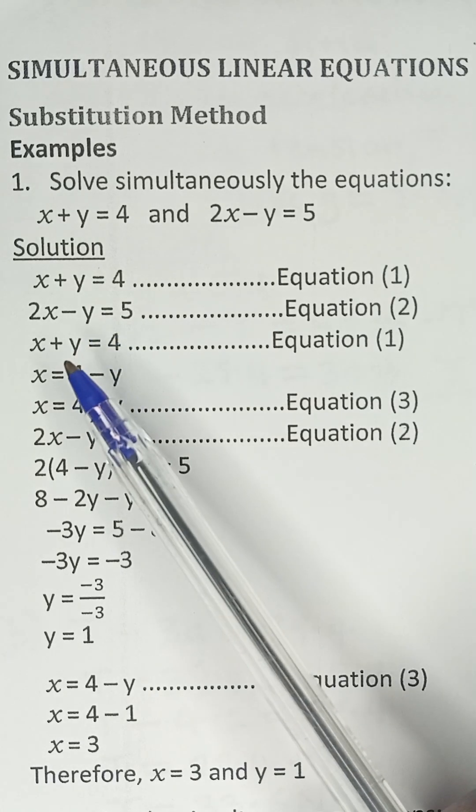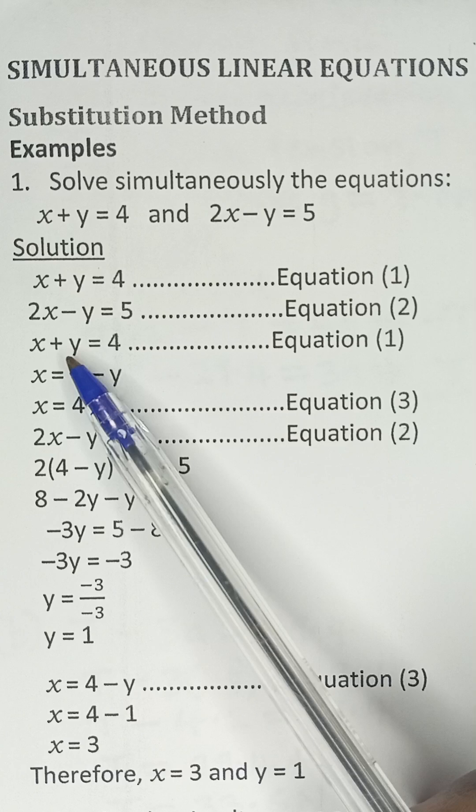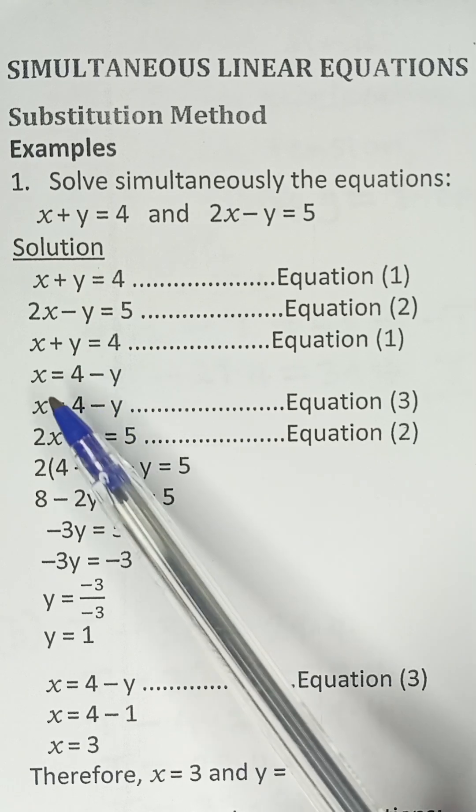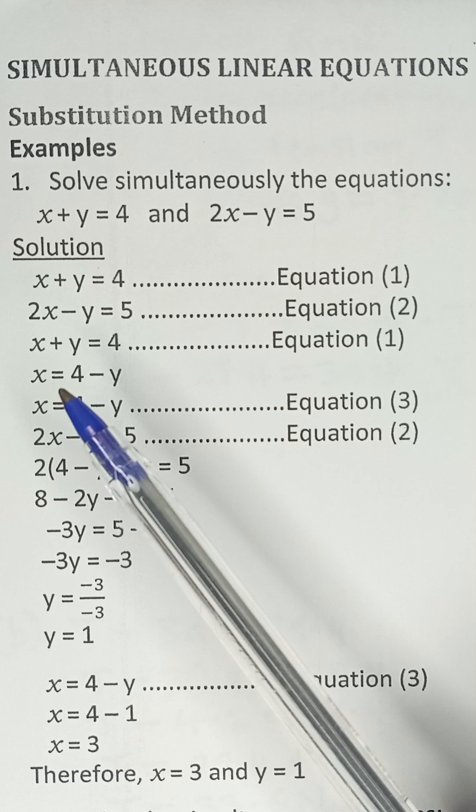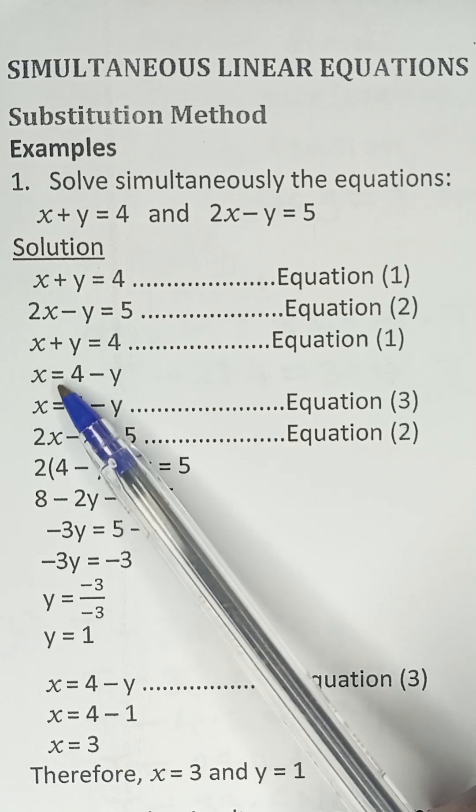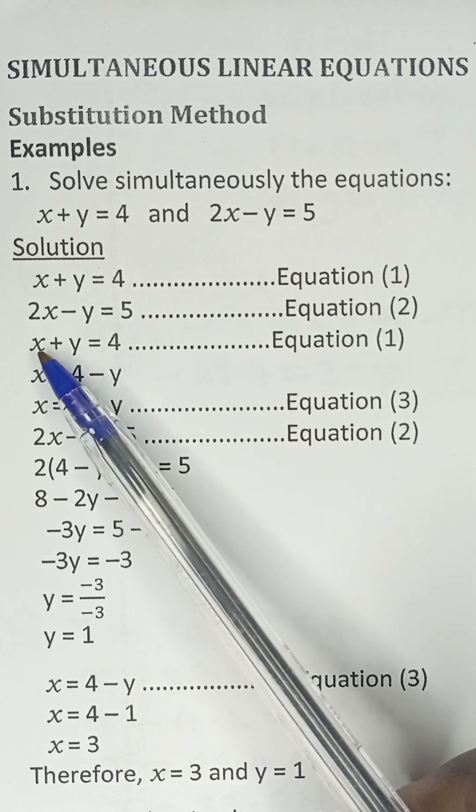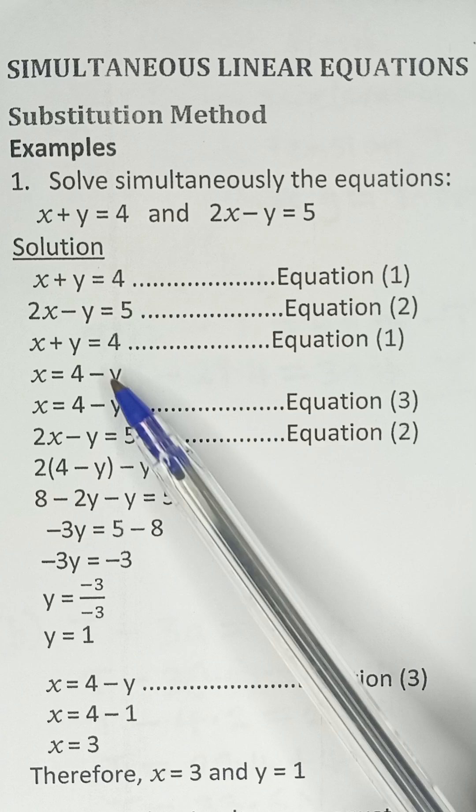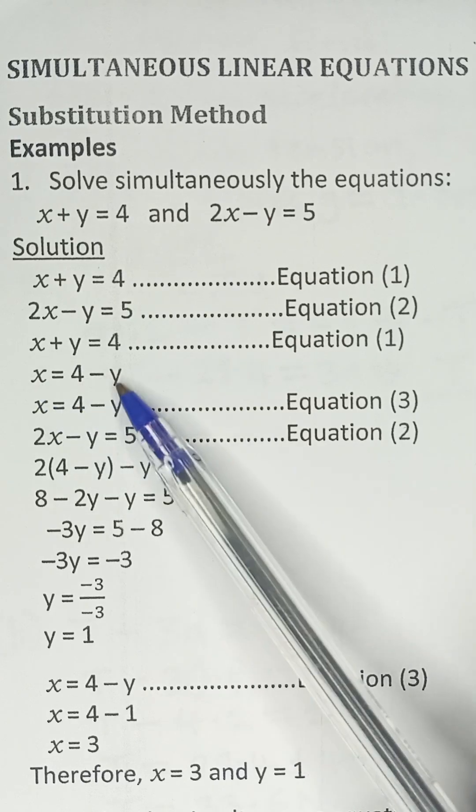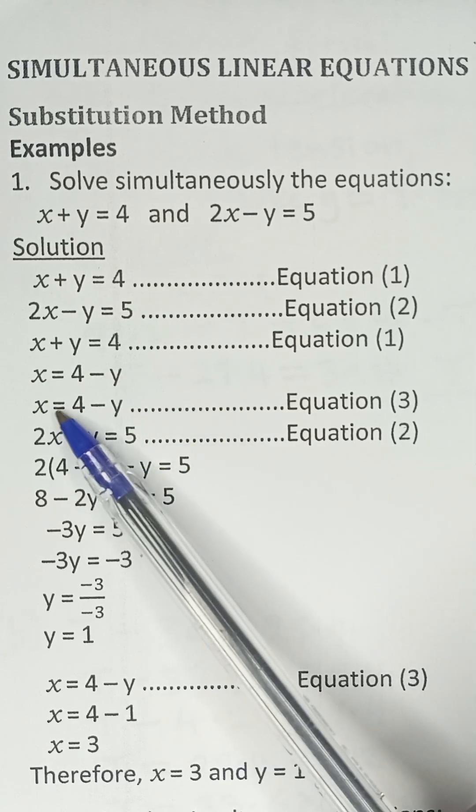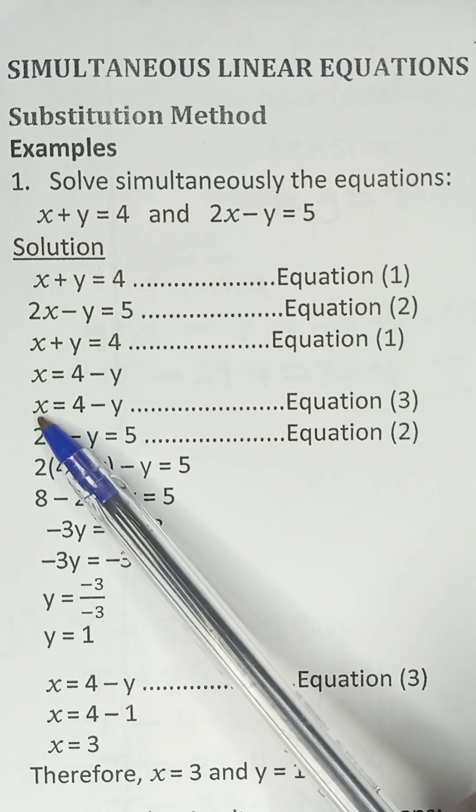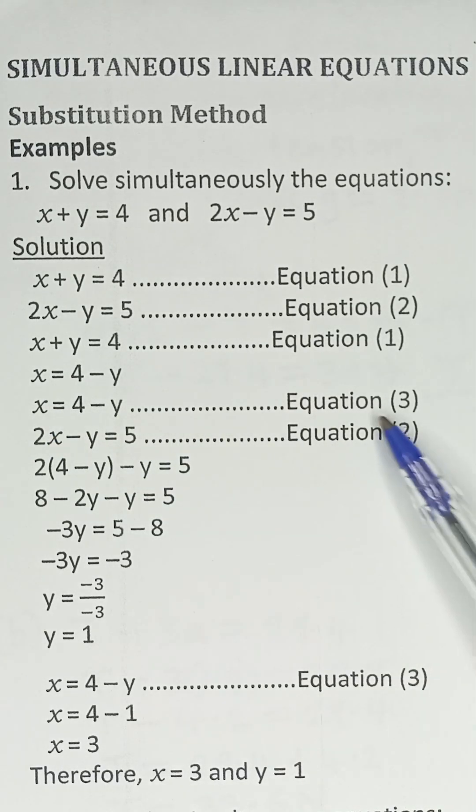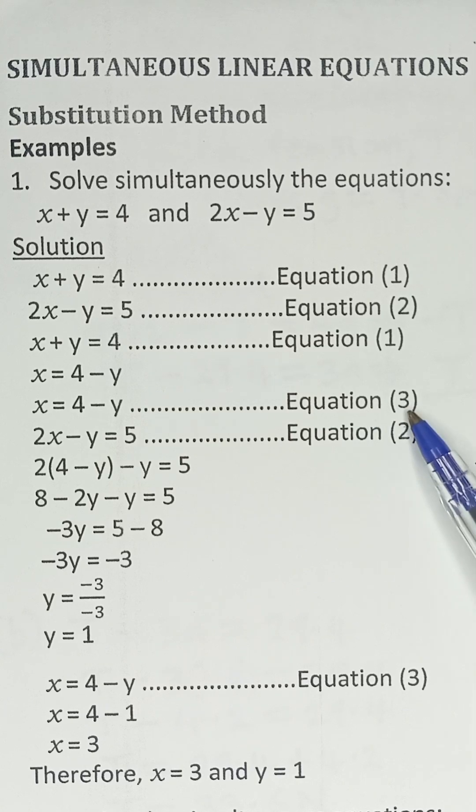From equation 1, we can simply make x the subject of the formula. So that means x equals 4 minus y, because when y goes to the other side, it becomes negative. This can be labeled equation 3, since we have made x the subject of the formula from equation 1.